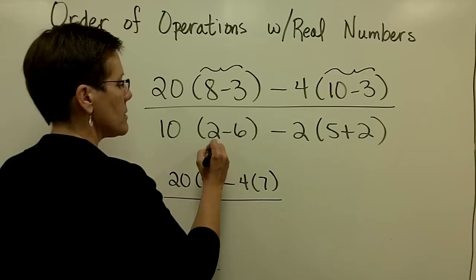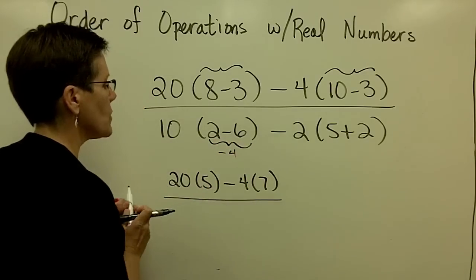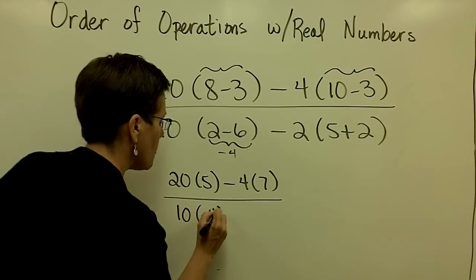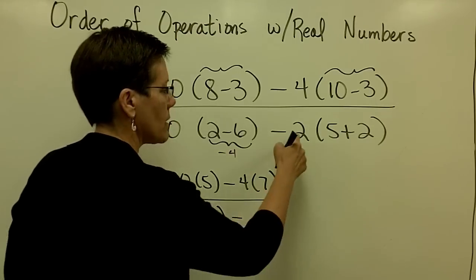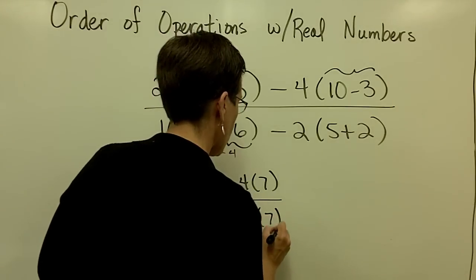2 minus 6 right there is a negative 4. So in the denominator, I'm going to have 10 times a negative 4. I'm going to bring that minus sign. Minus 2 times 5 plus 2 is 7.